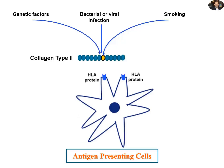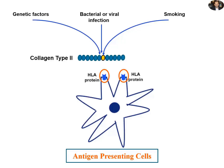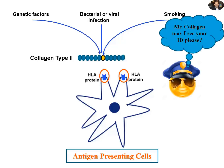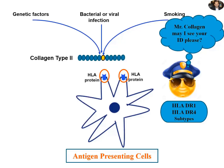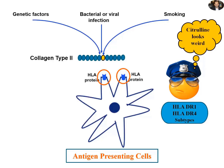The antigen presenting cells, APCs, such as dendritic cells, which patrol our tissues, recognize this new mutated collagen. These antigen presenting cells have specific detecting molecules on the outer cell membranes called HLA molecules. Specific types of these HLA molecules, which are HLA-DR1 and HLA-DR4, become confused and deal with the new collagen as foreign bodies.